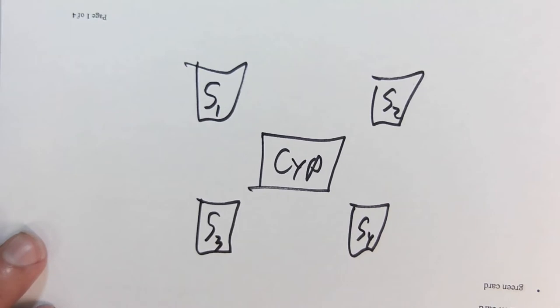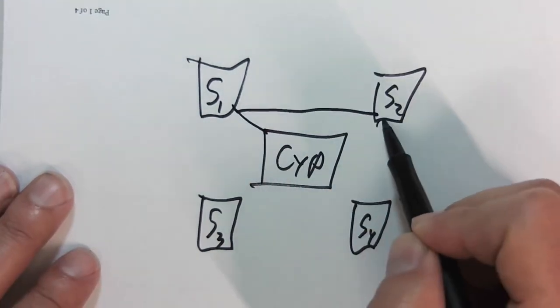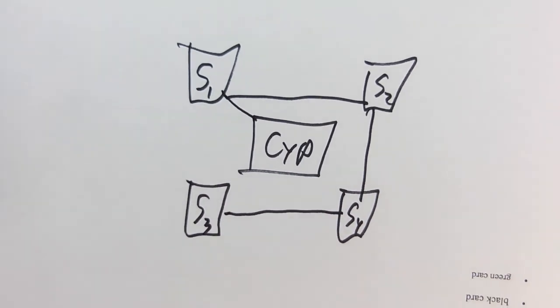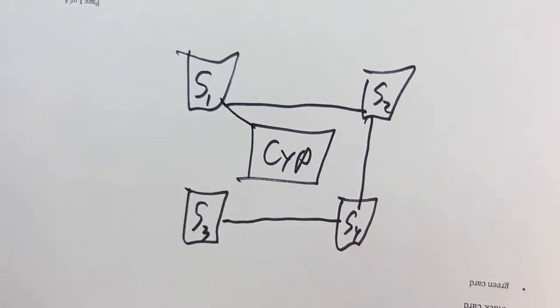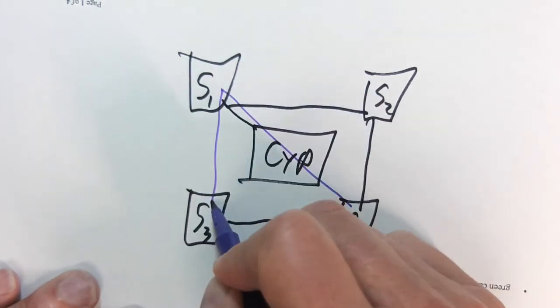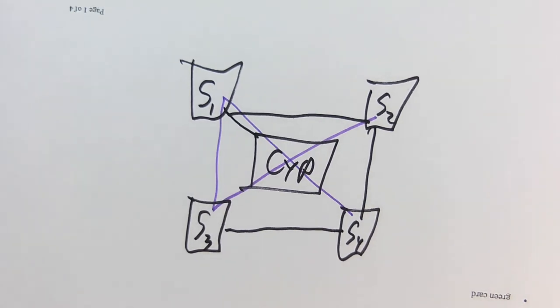We want to know how many different ways we can go. One possible route is one, two, four, and three. Another one could be start at four, go to one, then go to three, then go to two. So you can see this is just going to get super convoluted. So I want to come up with a more efficient way of writing this out.